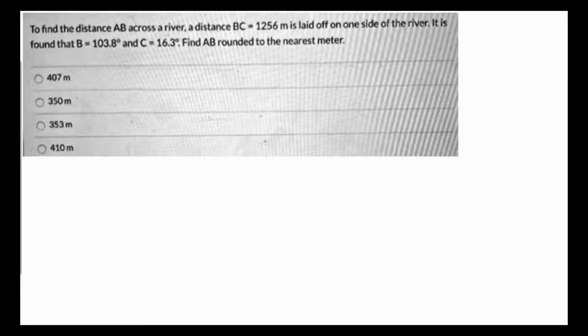To find the distance AB across a river, the distance BC equal to 1256 meters is laid off on one side of the river. It is found that B and C are angles, so we have to find AB to the nearest meter.